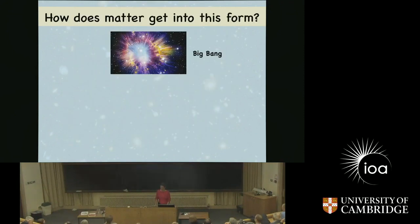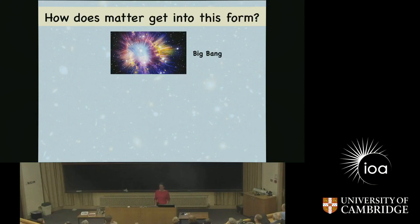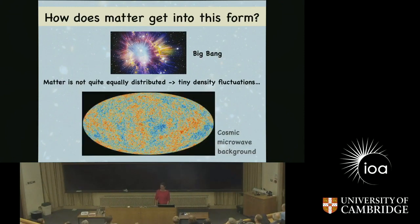We know the universe started with a big bang. You have matter in the universe which starts expanding from that big bang. And you'd expect, if you had a bucket of water and splashed it out, you'd expect it just distributes more or less equally, right? This is, however, not quite what it is. Matter is not quite distributed equally in the universe.